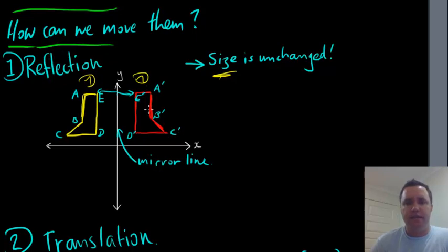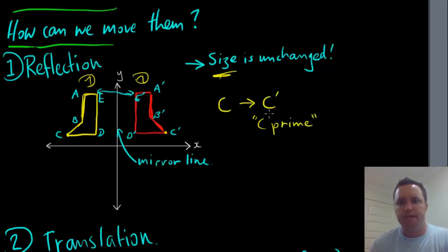Now, these little tick mark things here, right? See in this reflection, the letter C, this point here, or this vertex here has been reflected to this point, this vertex here. So C becomes point C prime, which is what that means. So you'd say this C prime. That's what that little mark means up here, C prime. Same as B prime, A prime, E prime, and D prime.